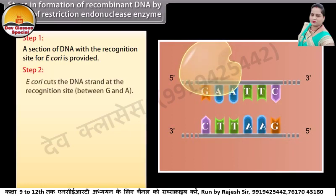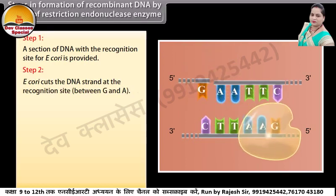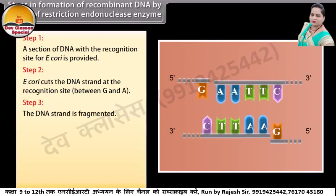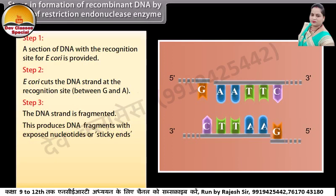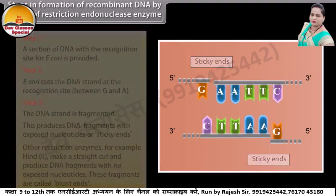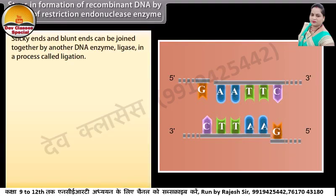Step 2: EcoRI cuts the DNA strand at the recognition site between G and A. Step 3: the DNA strand is fragmented. This produces DNA fragments with exposed nucleotides, or sticky ends. Other restriction enzymes, for example HindII, make a straight cut and produce DNA fragments with no exposed nucleotides — these fragments are called blunt ends. Sticky ends and blunt ends can be joined together by another DNA enzyme, ligase, in a process called ligation.